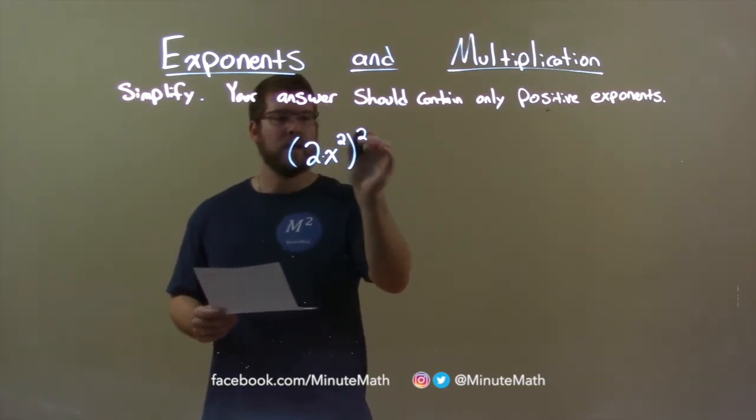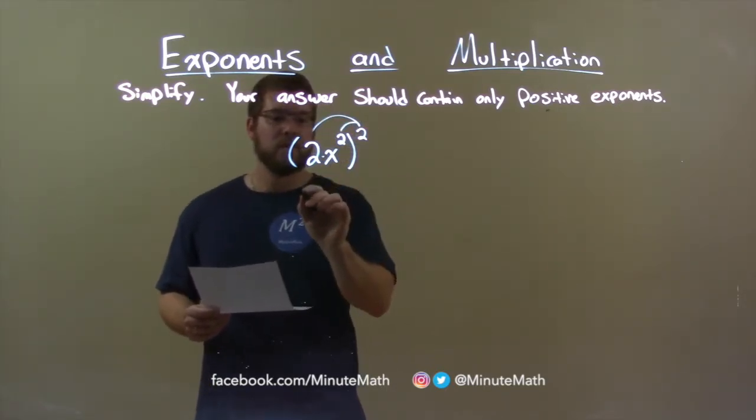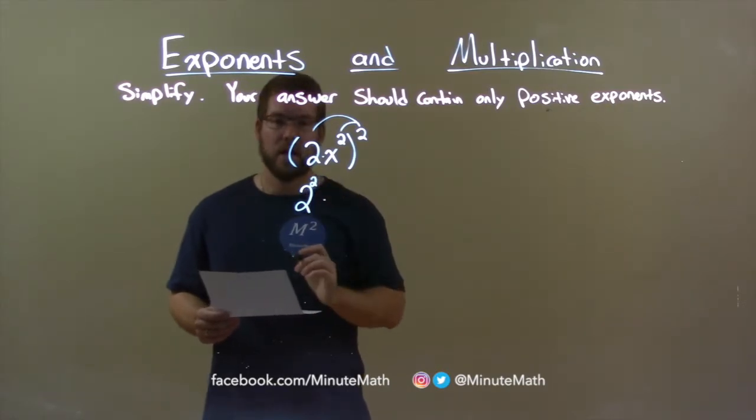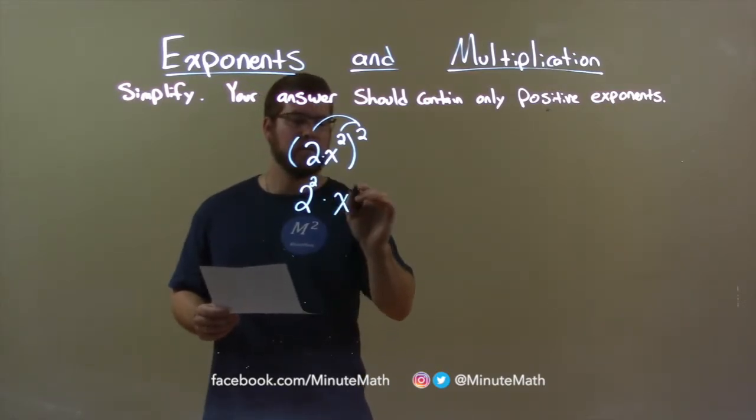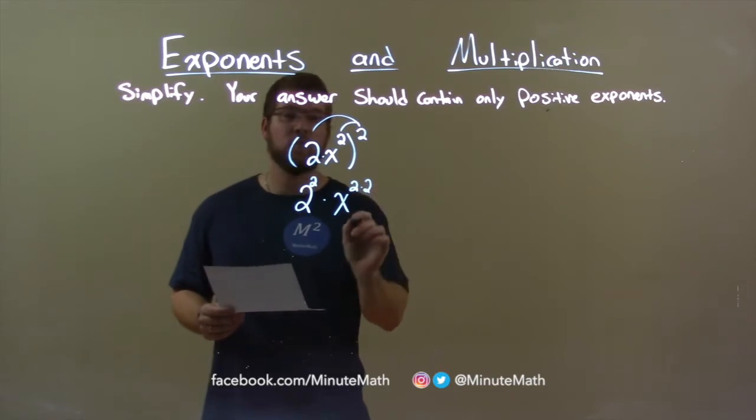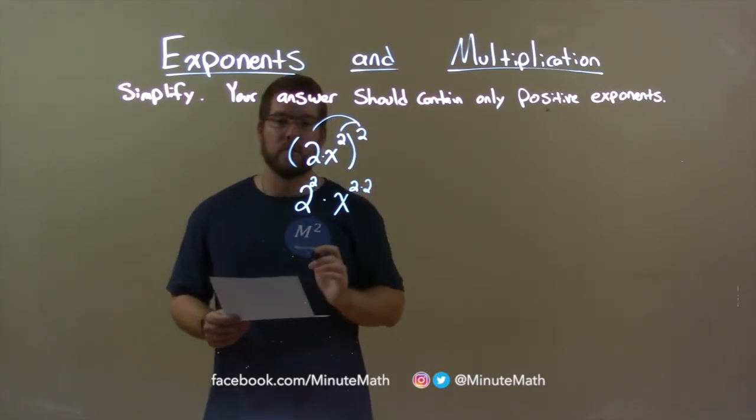So when I bring that in, this becomes 2 to the second power times x to the 2 times 2 power. When we bring it in, it's being multiplied.